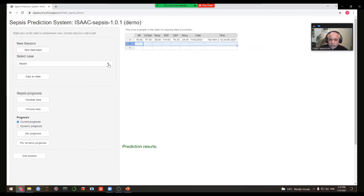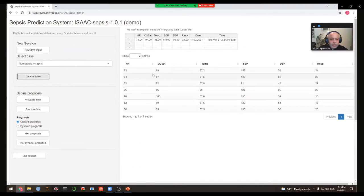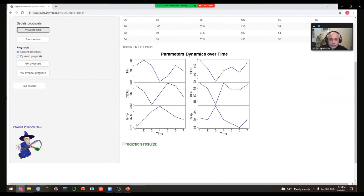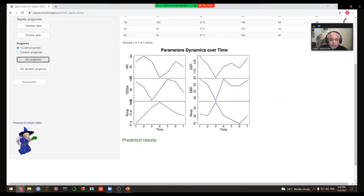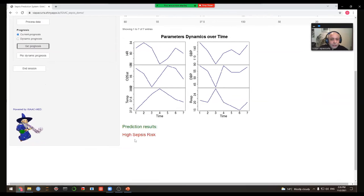What else we can do with this application? Here we have a list of pre-selected cases, and I will be using one of them. We can display the patient data as a table with columns for respective parameters and rows for all the observations. We can also visualize this data as plots. We can see that our patient is for seven hours in the intensive care unit. And finally, we can get the prognosis for the last observation, which in this case is high risk sepsis prediction.